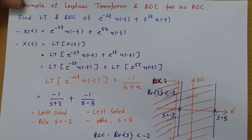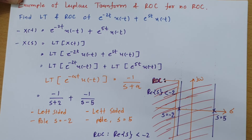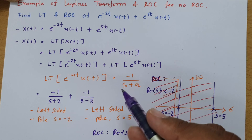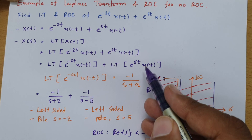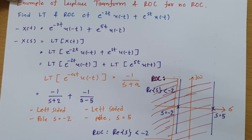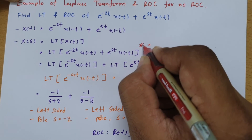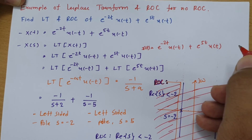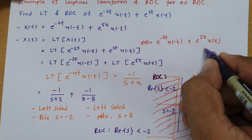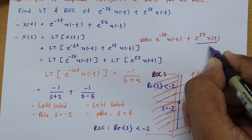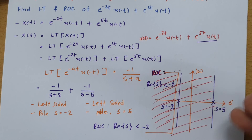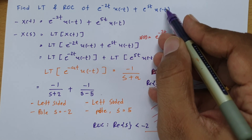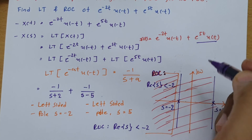This example shows a case where a common ROC exists. But consider what happens if the second signal is right-sided, i.e., u(-t) is replaced by u(t), giving x(t) = e^(-2t) u(-t) + e^(5t) u(t). In that case, the ROC for the second term would be to the right of s = +5, and there would be no overlap with the left-sided ROC. So simply changing u(-t) to u(t) results in no ROC for the combined signal.